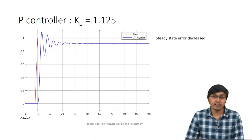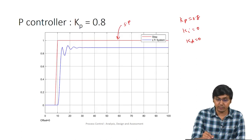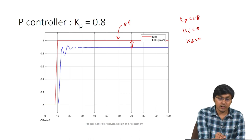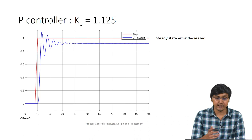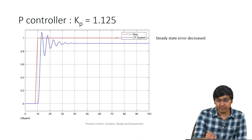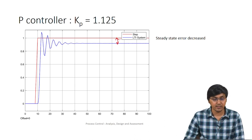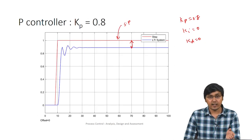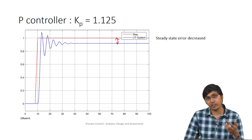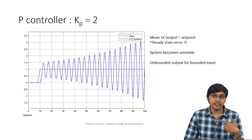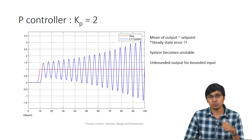We can clearly see there is an offset — the output reaches only about 0.9 instead of 1. By increasing Kp we can decrease this offset. We increased Kp from 0.8 to 1.25 and observed a decrease in the offset. So why not increase Kp a bit more? Let us set Kp = 2 and see the response.